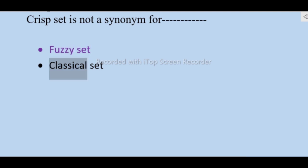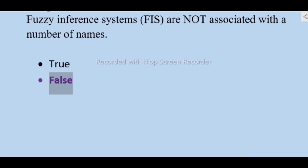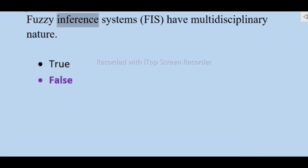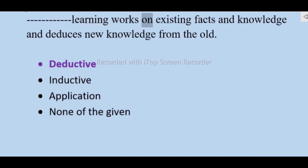Fuzzy inference systems (FIS) are not associated with a number of names — true or false — false. Fuzzy inference systems (FIS) have a multidisciplinary nature — true. Deductive learning works on existing facts and knowledge and deduces new knowledge from the old.